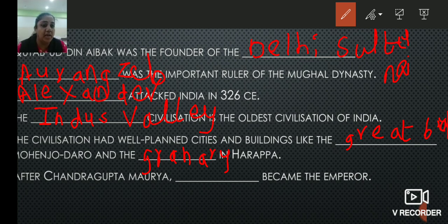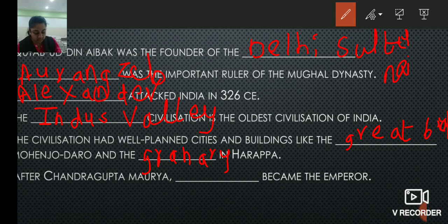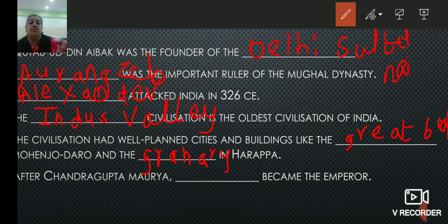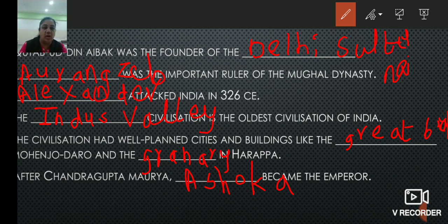Last: after Chandragupta Maurya, blank became the emperor. After Chandragupta Maurya, his grandson became the emperor. The name of the grandson of Chandragupta Maurya is Ashoka. So Ashoka — A-S-H-O-K-A — became the emperor.